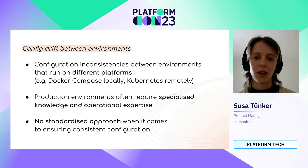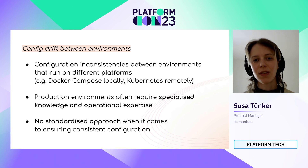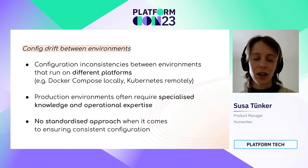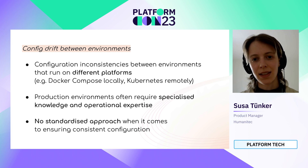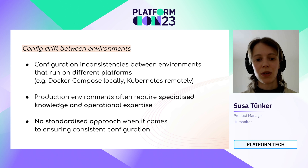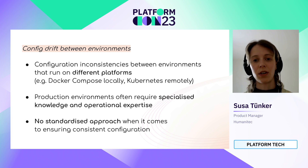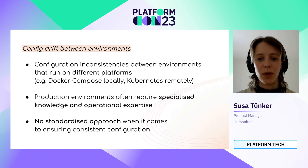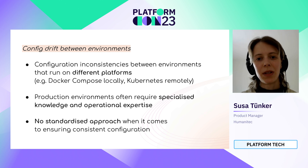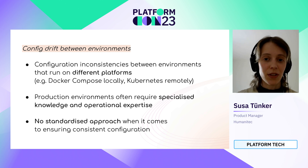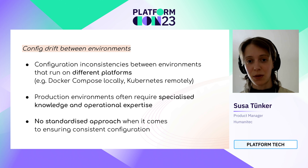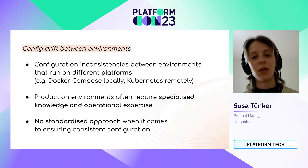What do we mean when we talk about config drift between environments? Config drift is just one of these terms that can mean a lot of different things depending on the context you're in. For this talk, I want to refer to config drift as inconsistencies between environments that run on different platforms. Just to give you an example, you might be running your workloads locally with a lightweight tool such as Docker Compose while then deploying to a platform orchestrator like Kubernetes in a remote cloud environment.